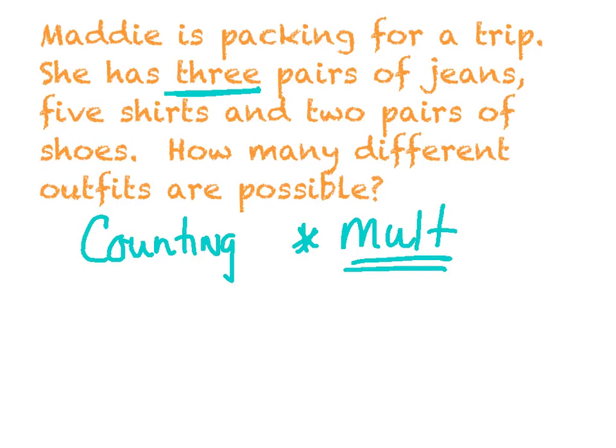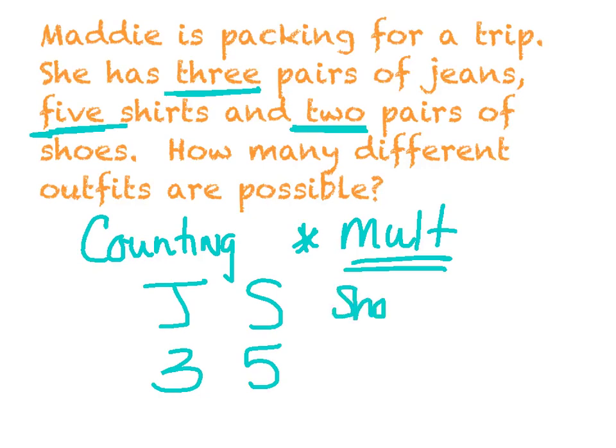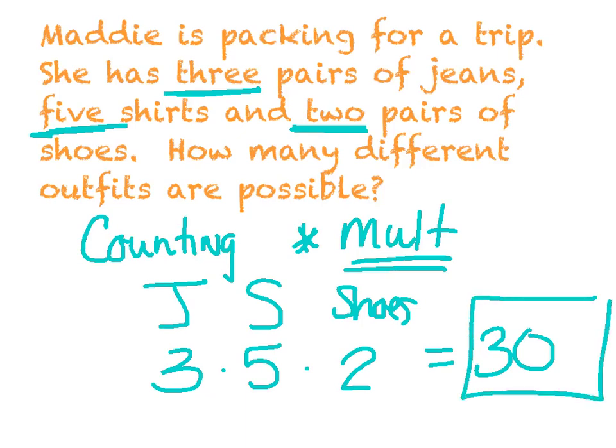She has three pairs of jeans. So under jeans, I'm going to say three. She has five shirts. And she has two pairs of shoes. And remember, that counting principle just says multiply. So I basically have three times five times two for a total of 30 different possible outfits. Now, if I wanted to know what exactly all 30 were, I could make the tree diagram and list them all out. But if I just want to know how many, the fundamental counting principle will get the job done.